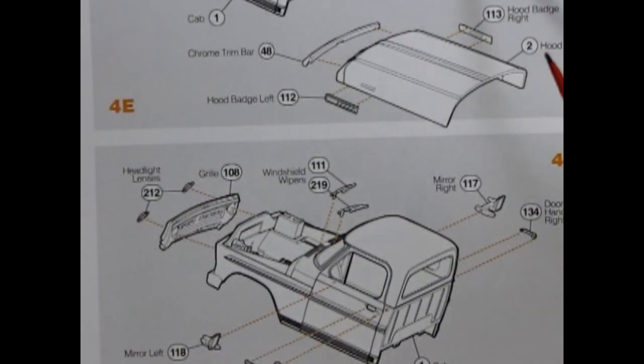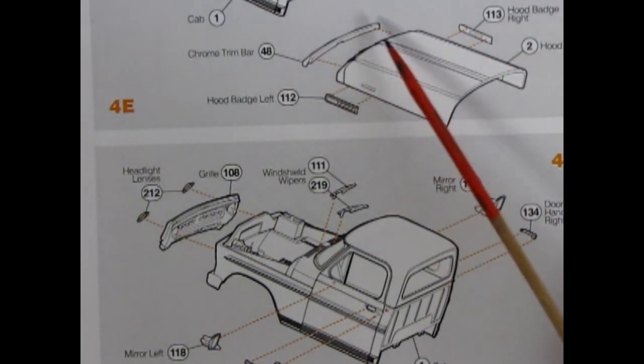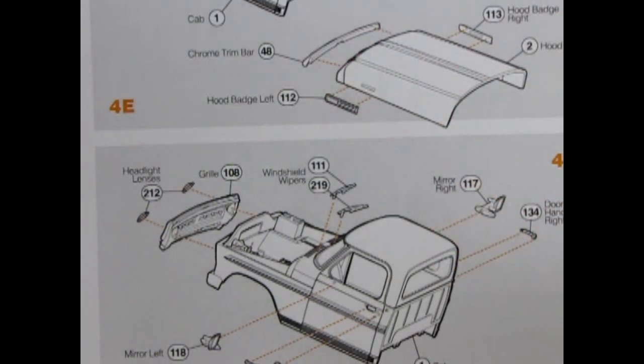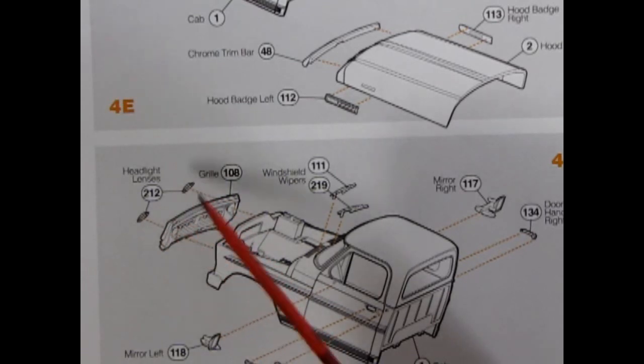For our hood we have right and left hand side hood badges as well as a chrome trim bar. Then we finalize the cab by gluing on our door handles right and left, our gas cap, our right and left rear view mirrors, windshield wipers and grille with the two headlight lenses.